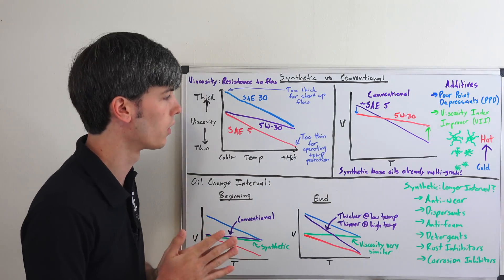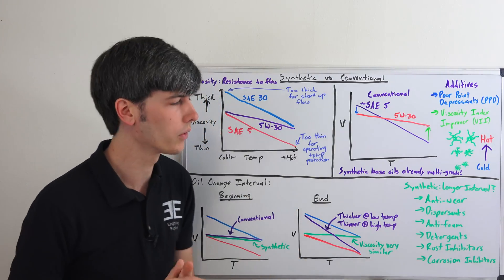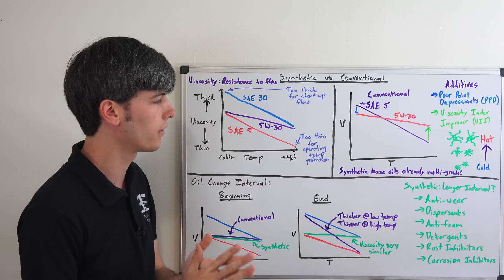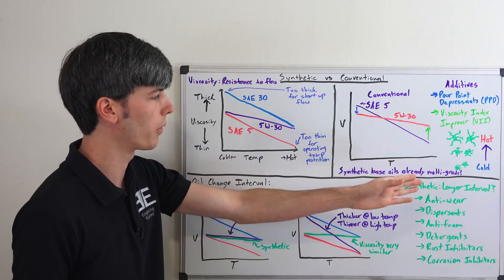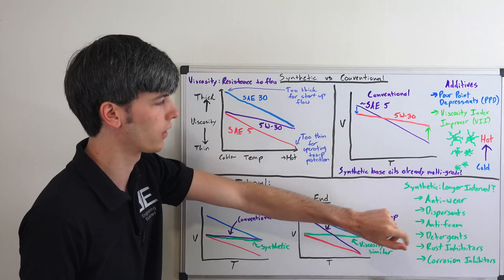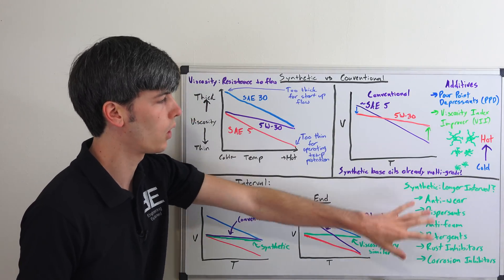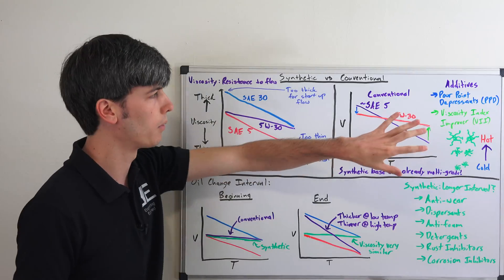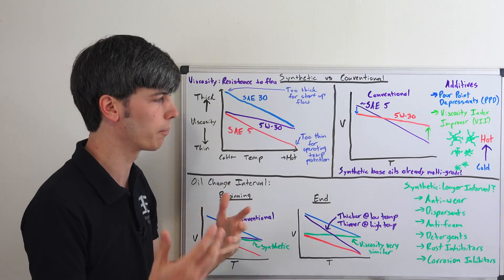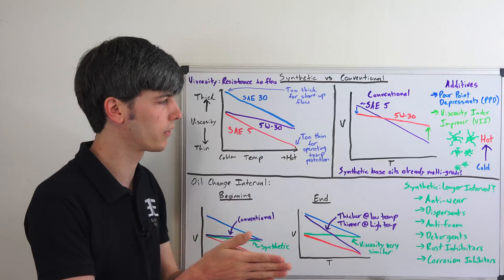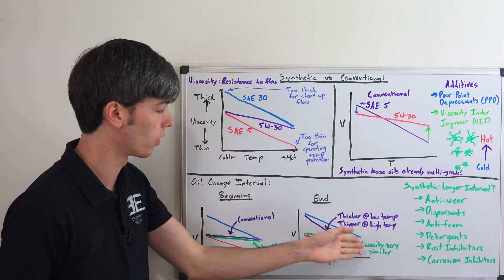And so you may be thinking okay well does this mean I can use a synthetic oil for longer oil drain intervals and that's not necessarily the case at all you should certainly always go with whatever your car manufacturer recommends because there's all kinds of other additives in these motor oils both synthetic and conventional which I haven't discussed in this video but anti-wear, dispersants, anti-foam, detergents, rust inhibitors, corrosion inhibitors all of these are going to be in both of these motor oils conventional and synthetic and they will wear out over time and so for both cases you're going to need to replace the oil at the same interval you're just going to have better protection with the synthetic towards the end of your interval than you would with a conventional based on the viscosity differences.